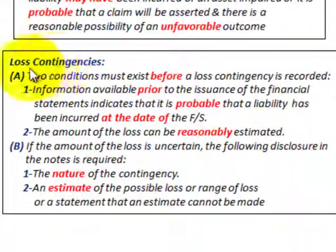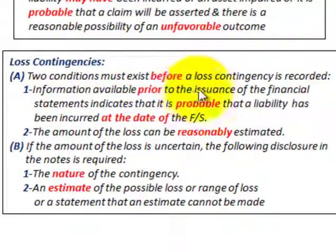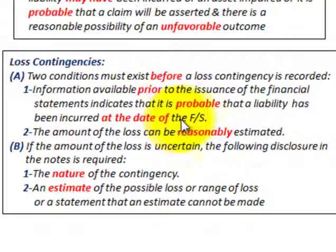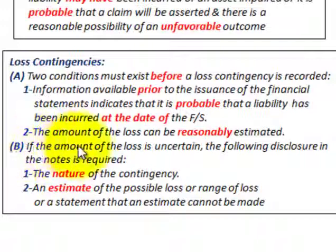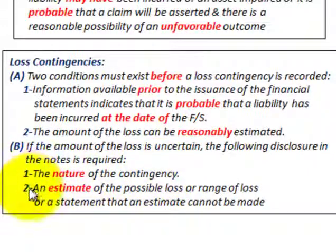To summarize loss contingencies: two conditions must exist before a loss contingency is recorded. First, information available prior to the issuance of the financial statements indicates it's probable that a liability has been incurred at or before the date of the financial statements. Second, the amount of the loss can be reasonably estimated. Additionally, if the amount of the loss is uncertain, disclosure in the notes is required, including: the nature of the contingency, and an estimate of the possible loss or range of loss, or a statement that an estimate cannot be made.